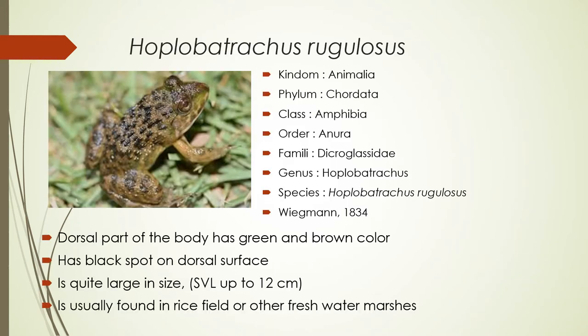In this slide is the description of Hoplobatrachus rugulosus — this is the taxonomy. It is in the family Dicroglossidae, its genus is Hoplobatrachus, and its species is Hoplobatrachus rugulosus. You can also see a picture of it: the dorsal part of its body has green and brown color, and in its back there are black spots like black dots.